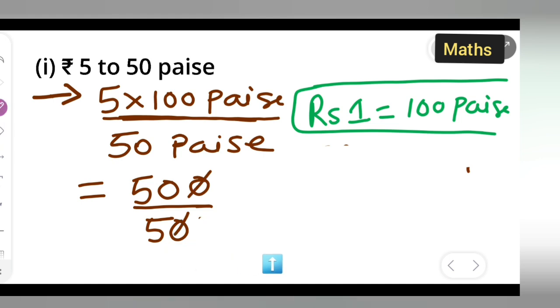Now we simplify: the zeros cancel, and dividing 500 by 50 gives us 10 over 1, which equals the ratio 10:1.